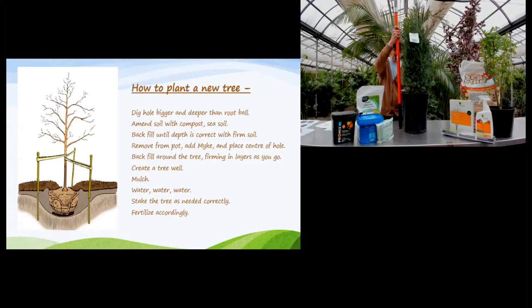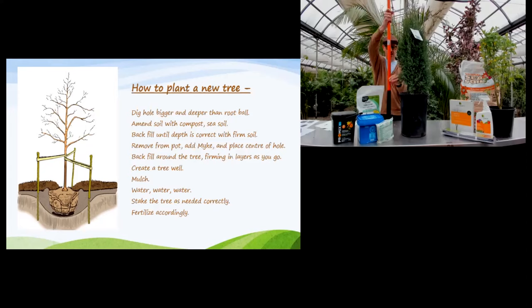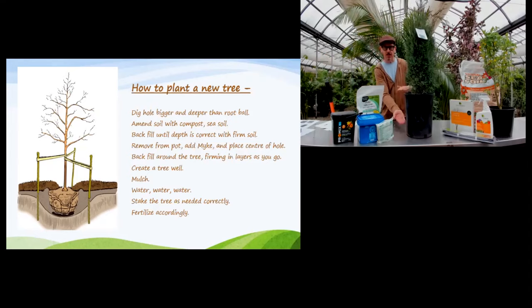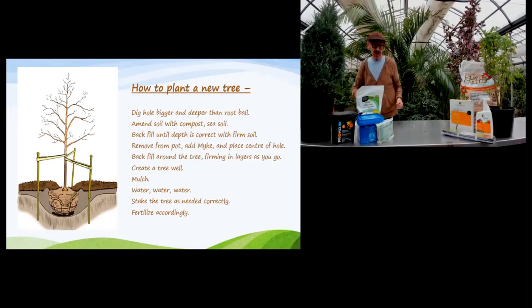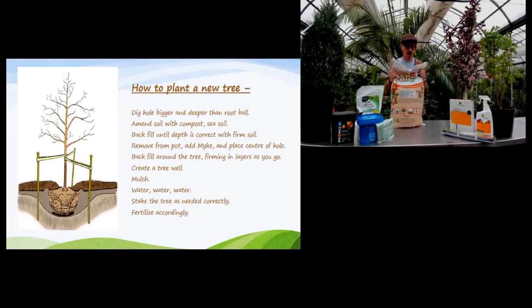I'm not measuring off the pot — I see a lot of people do that. I'm measuring off the soil inside the pot, because that's where the crown of my tree is. I flip my shovel, look inside — that's about the depth of my hole. I go across inside to inside — that's about the width. Then I'm going to go about half as deep again for my depth, and double the width. So I dig my hole — I get rid of the grass but I keep that soil, even if it's clay, and I'll explain why.